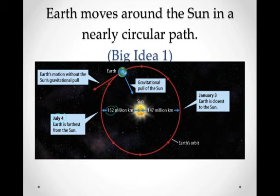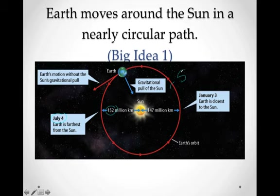The difference is only about 5 million kilometers, which sounds like a lot, but really isn't when you're talking about hundreds of millions of kilometers. A lot of students think that distance from the sun causes the seasons, but that's not the case — in July, when Earth is farthest from the sun, we actually experience summer in the northern hemisphere. So distance from the sun really doesn't affect seasons or temperature.